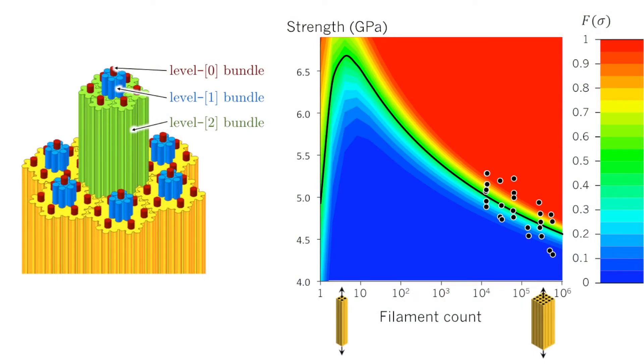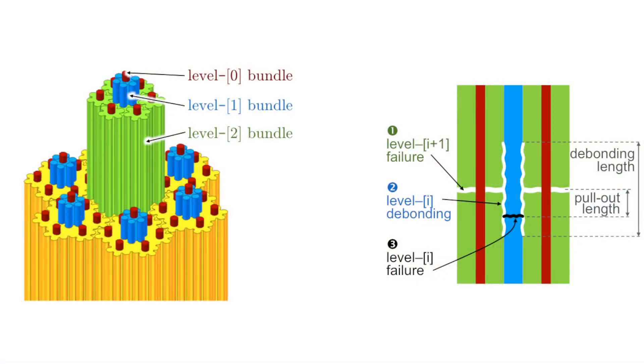These observations led to the idea of representing the fibre bundles hierarchically. This representation was naturally suited to yield analytically the stochastic strength distribution for a bundle with a given number of fibres from simple fibre, matrix and interface properties. On its own, this stochastic size-dependent strength model was something new.